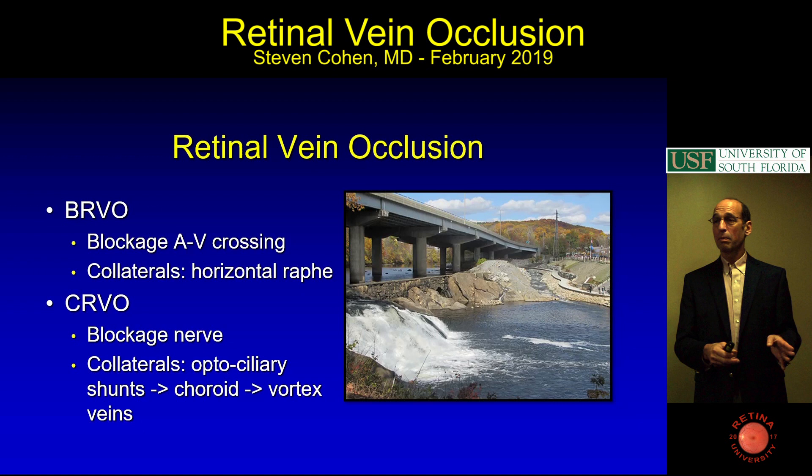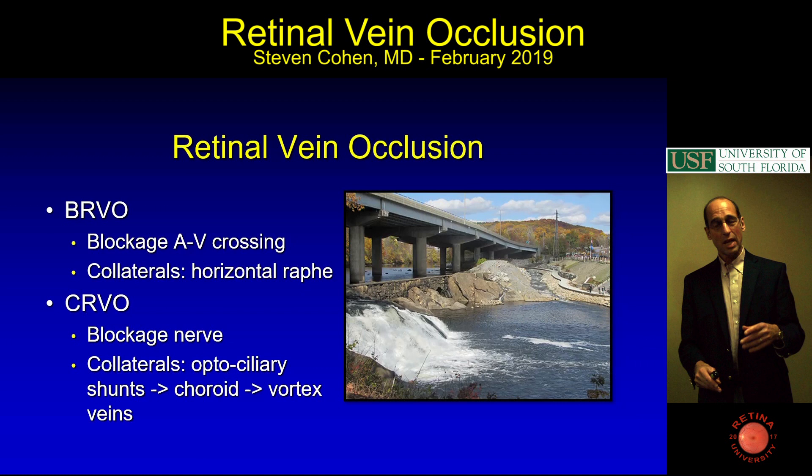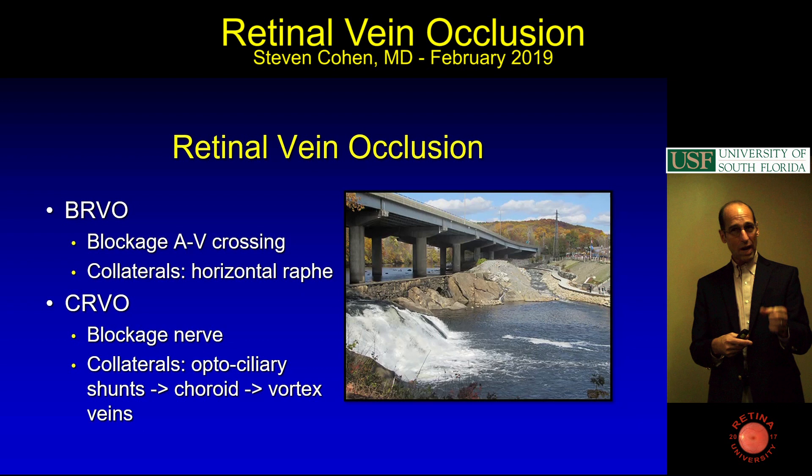Over time, just like if you block a river and the water finds its way around, if you block a vein, the body opens up collateral circulation—your body will heal a vein occlusion. The central vein has to do with a little canal, and it's not known yet if it's a narrowing of the canal or hardening of the artery, but either way there's less room for the vein and it occludes.